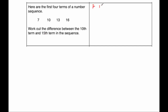So we've got 7, 10, 13, 16 — let's just carry the sequence on. Adding on 3 each time: 19, 22, 25, 28, 31, 34, 37, 40. Let's see how many terms we've got there.